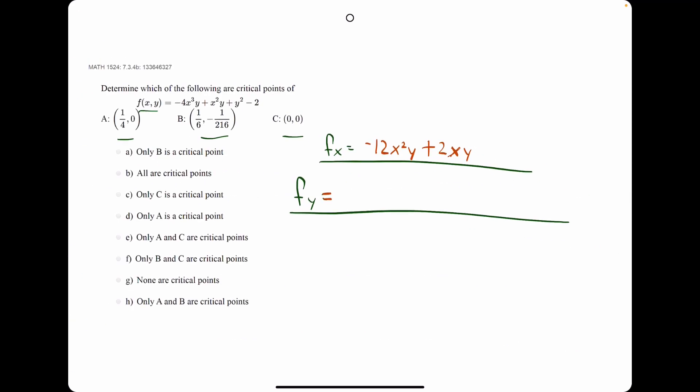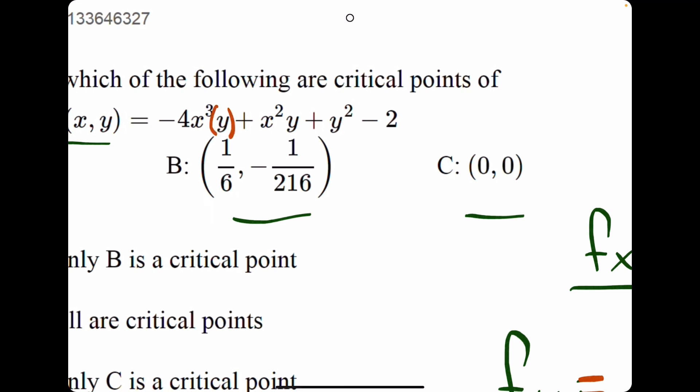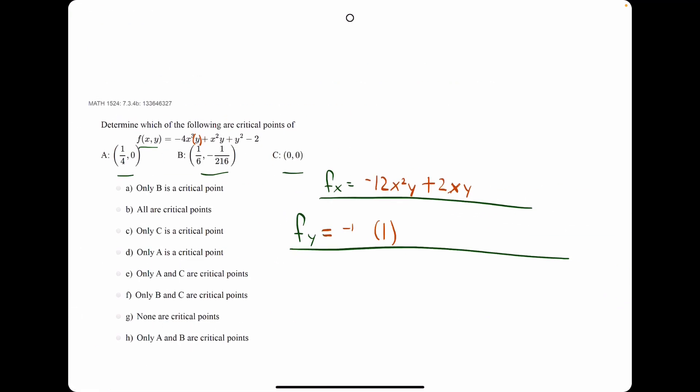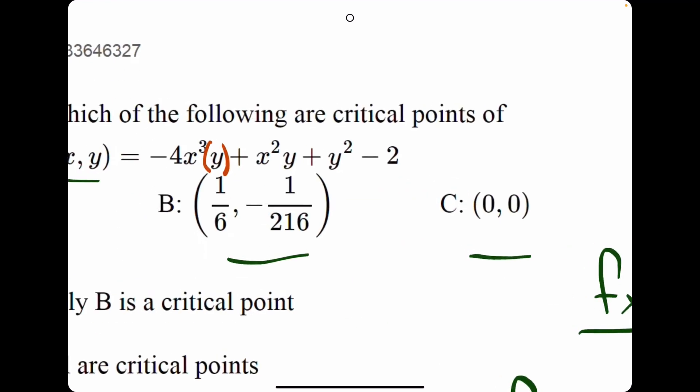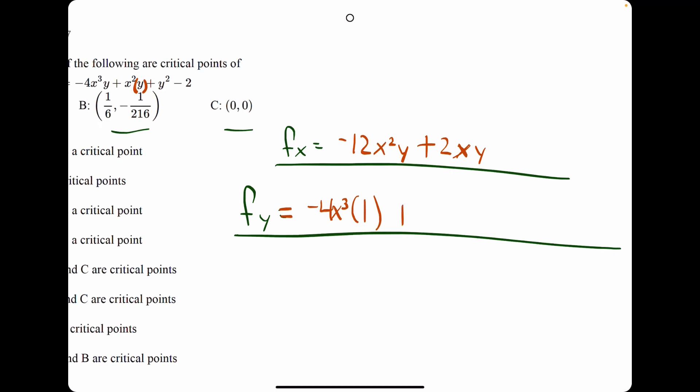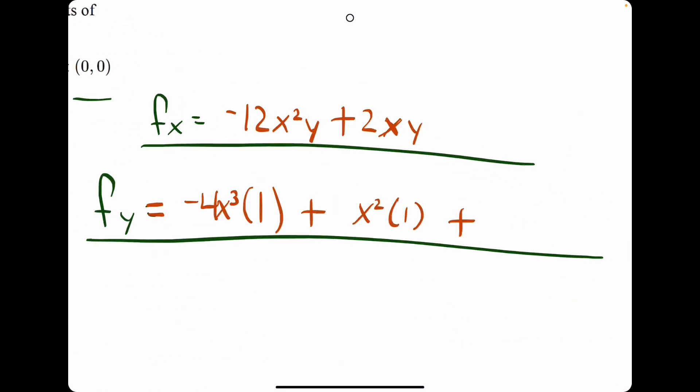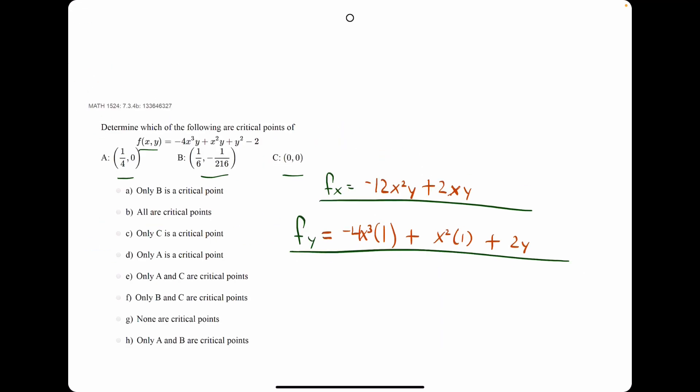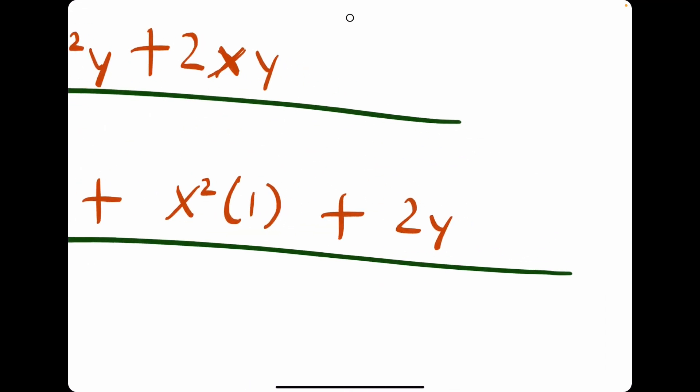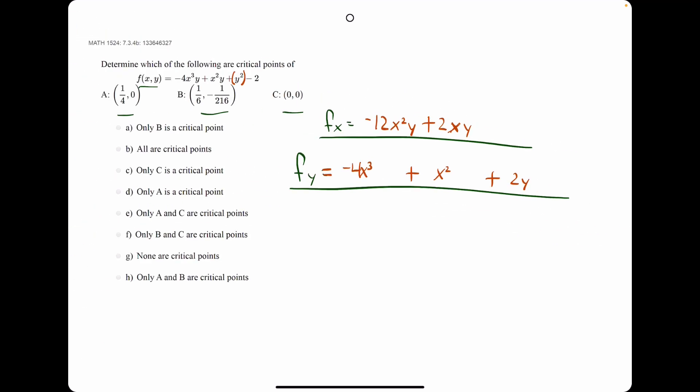This is our entire fx derivative, so now we need the derivative with respect to y. This y would go to 1, but then the minus 4x cubed would stay since it was multiplied by the y from the start, and then this y would go to 1, but then the x squared would stay attached since it was multiplied from the start, and then the plus y squared would go to plus 2y, and that would be it for the derivative with respect to y. These ones can basically get canceled out since we're just multiplying by 1 for each of them.